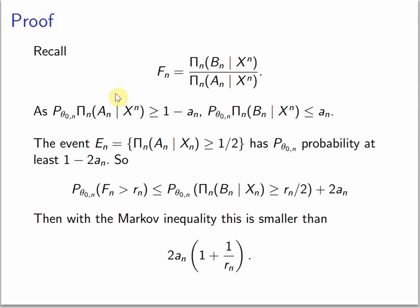What's the proof for this? We have that fn is this. Because An has more than 1 minus alpha n posterior mass in expectation, it follows that because they are disjoint, this is smaller than an. This event, you can prove that the posterior mass around An is at least half, has probability at least 1 minus 2 an. So the probability that fn is bigger than rn is bounded by this. Then with the Markov inequality, this is smaller than this.